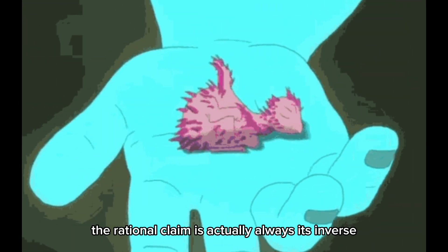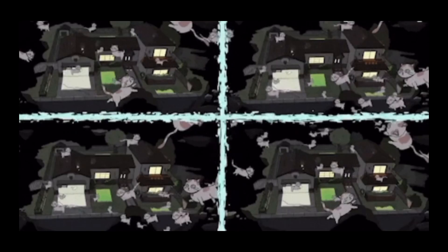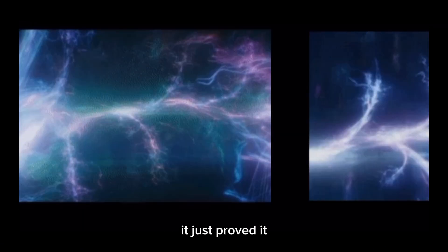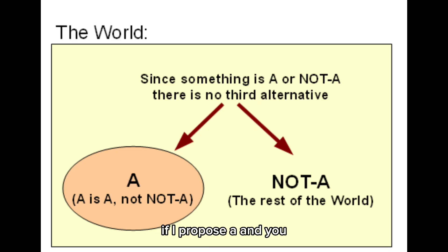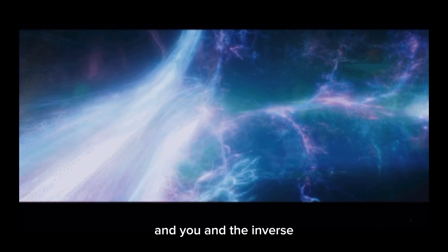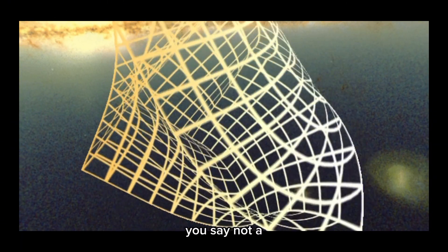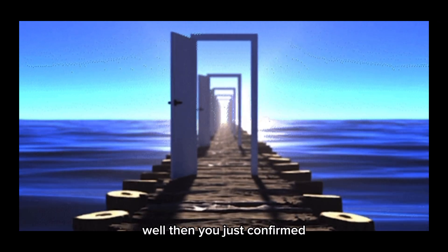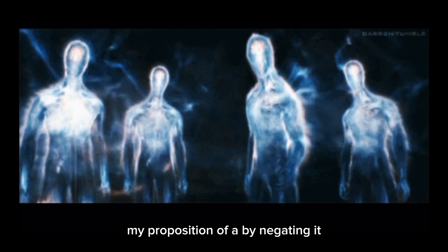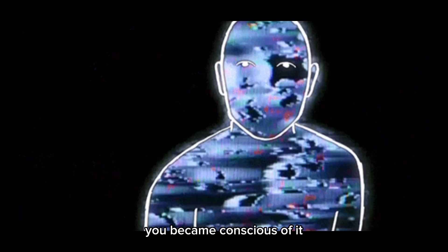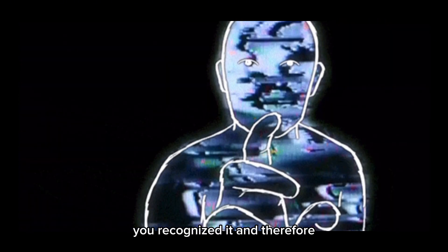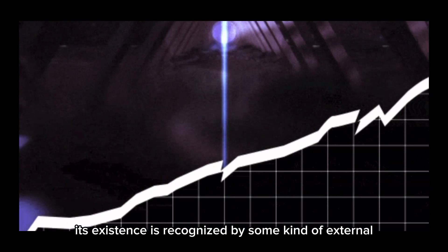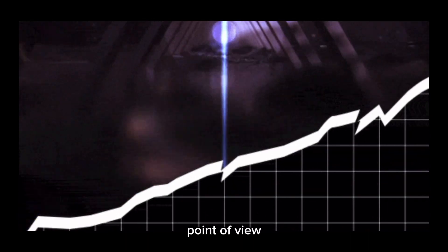So whenever there's a proposition, the rational claim is actually always its inverse. It's because it just proved it. You see, if I propose A and you in turn say not A, well then you just confirmed my proposition of A by negating it. And that is therefore you are aware of it, you became conscious of it, you recognized it, and therefore its existence is recognized by some kind of external point of view.